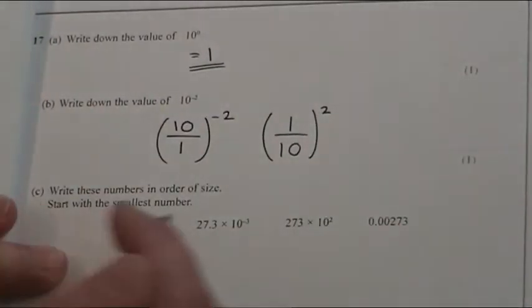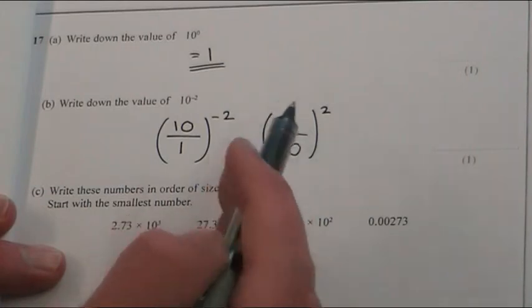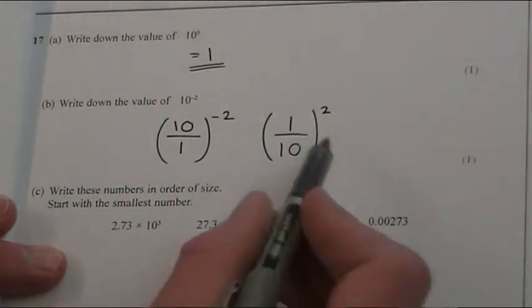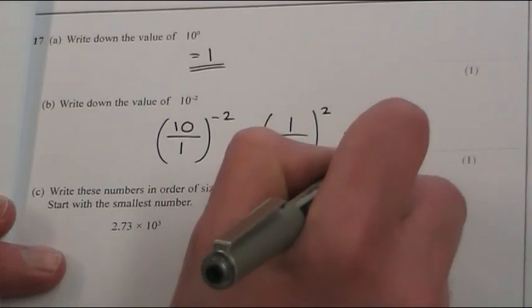It's easy to square stuff. So 1 tenth squared means 1 tenth times 1 tenth. So 1 squared is 1. And 10 squared is 100.